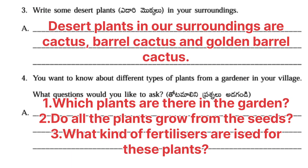Fourth question: you want to know about different types of plants from a gardener in your village. What questions would you like to ask? First question to ask the gardener: which plants are there in the garden? Second question: do all the plants grow from seeds? Third question: what kind of fertilizers are used for these plants? You have to ask some more questions.